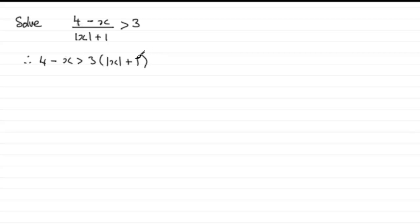Now I would multiply this out giving us 4 minus x is greater than 3 times the mod of x plus 3. And I would subtract 3 from both sides so we've got 1 minus x is greater than 3 mod x.